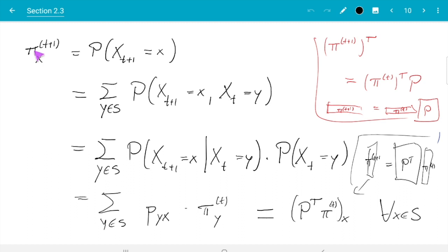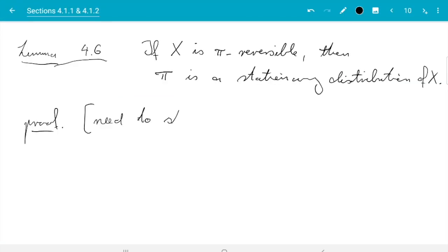Before we prove that, let's just remember what does it mean to be a stationary distribution. So this we did in section 2.3 of the book and earlier video. And here we see the condition pi is a stationary distribution of X if P transpose pi equals pi or equivalently, if you transpose the equation, pi transpose P equals pi transpose.